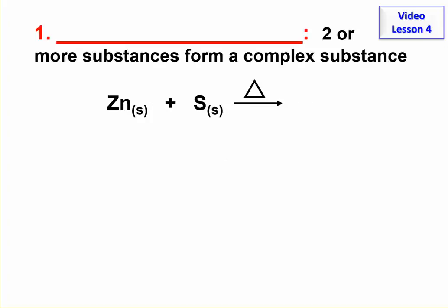First type is a combination reaction. In this one, two or more substances come together to form a larger substance. Okay, so that makes sense.